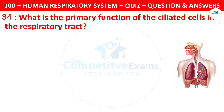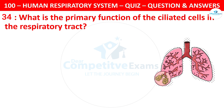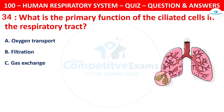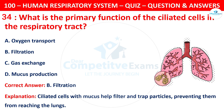Question 34: What is the primary function of the ciliated cells in the respiratory tract? The options are: oxygen transport, filtration, gas exchange, or mucus production. The correct answer is B — filtration. Ciliated cells, together with mucus, help to filter and trap particles, preventing them from reaching the lungs.